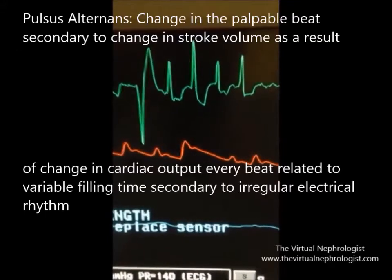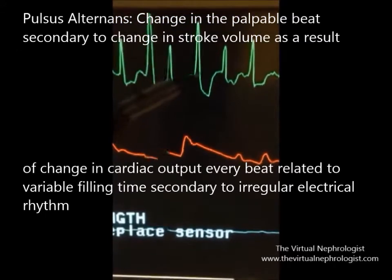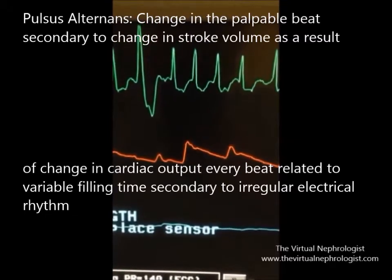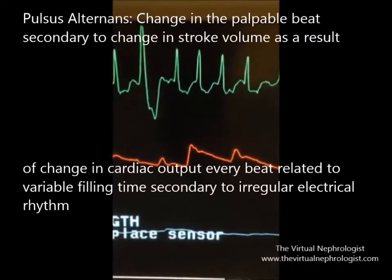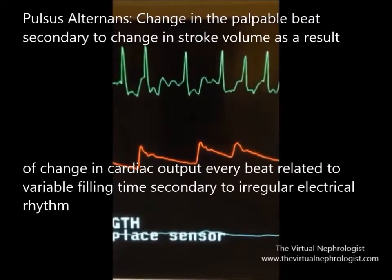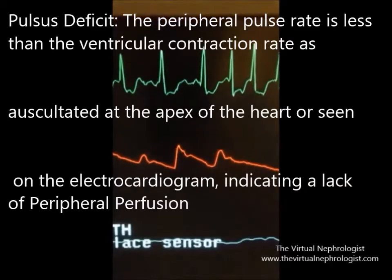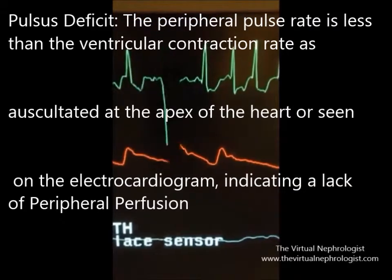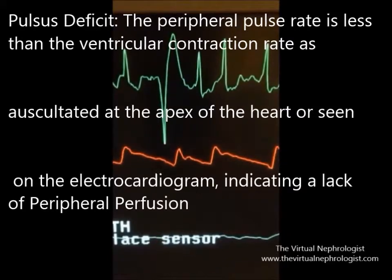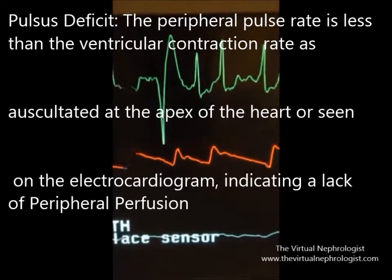Pulsus alternans is a change in the amplitude of the QRS per beat. The reason is the filling time in atrial fibrillation varies because of the irregular rhythm, so the stroke volume in each beat is different. Pulse deficit is the fact that some QRS beats do not transmit peripherally.